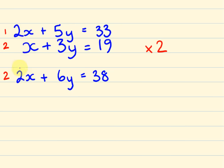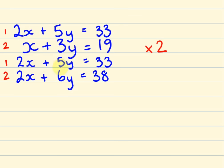You're going to notice I've actually got the coefficients in front of x the same for equation 1 and equation 2. I might actually just rewrite equation 1 here just to start off with. So again, equation 1 is 2x plus 5y equals 33. Now, what we do is we have these coefficients the same in front here. We can literally start taking one from the other. It's really worth looking at the variables over here — this one here is bigger than this one here.